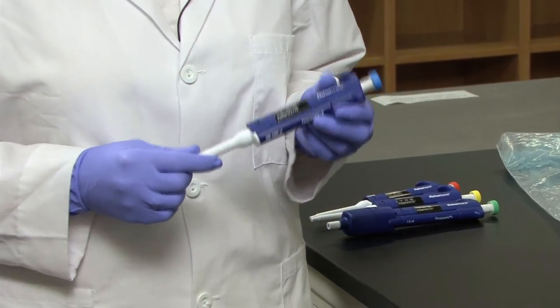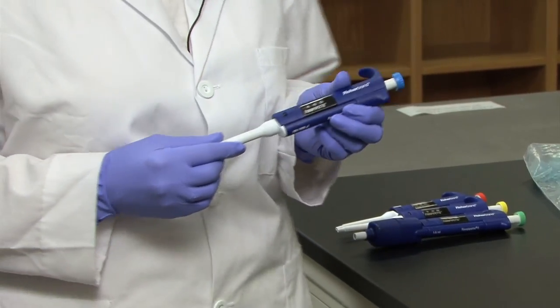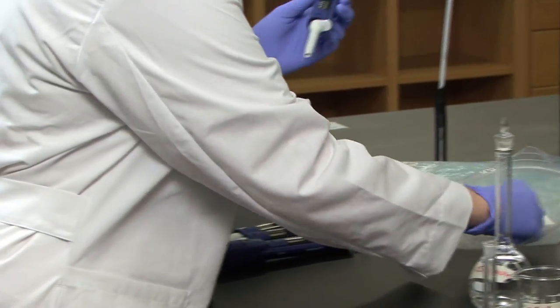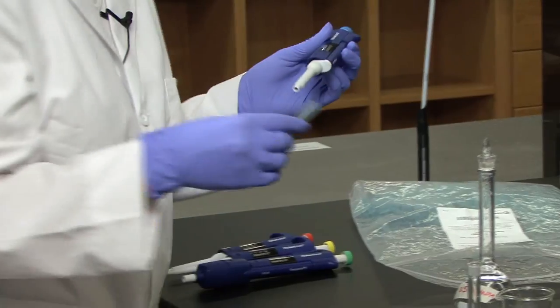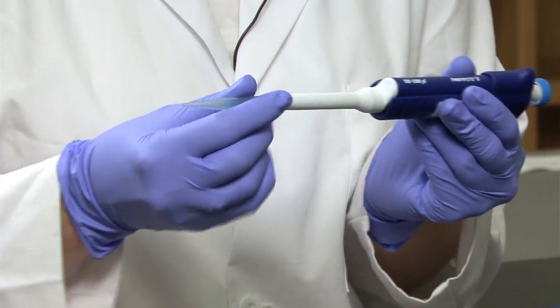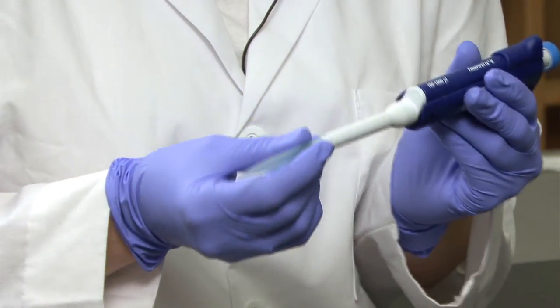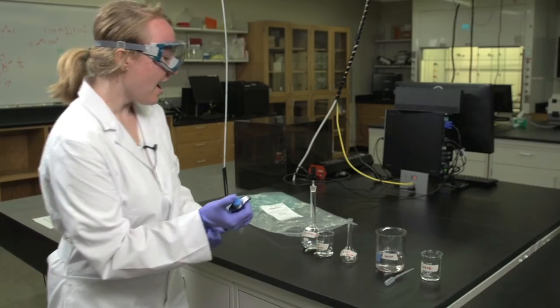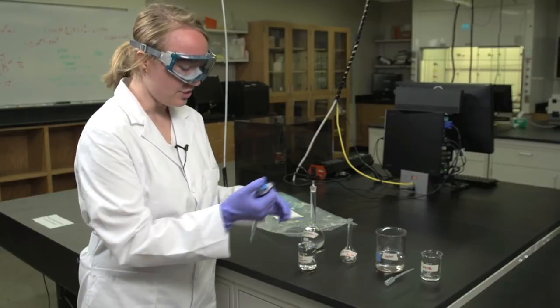You will need to make sure that you get the tip that is appropriate for your pipette. This one uses the blue tips. Slide it on the base of the pipette and push it on firmly. You want to make sure that it is on very firm so that you don't have any leakage of the solution, and then you are ready to transfer your solution.